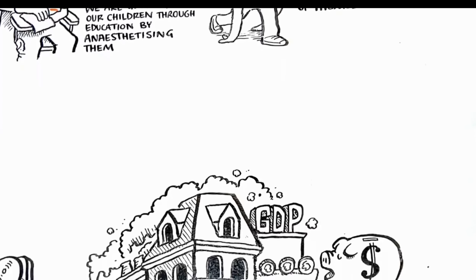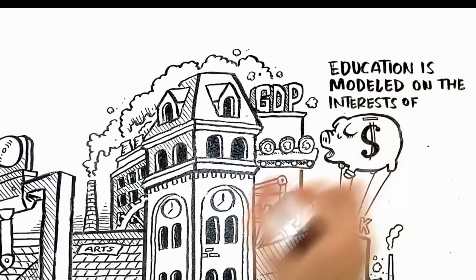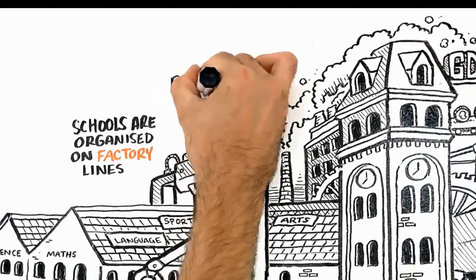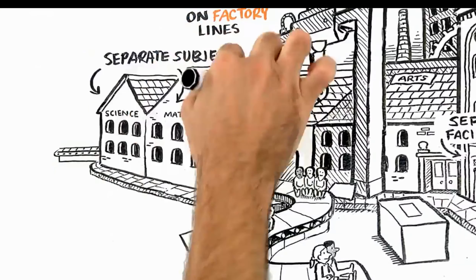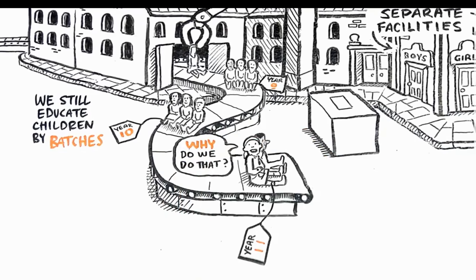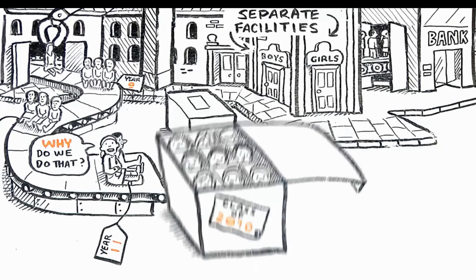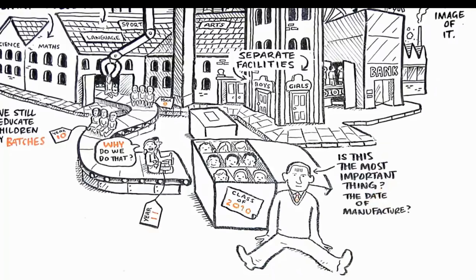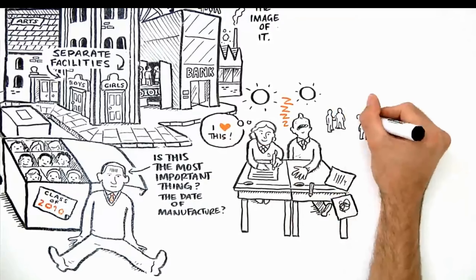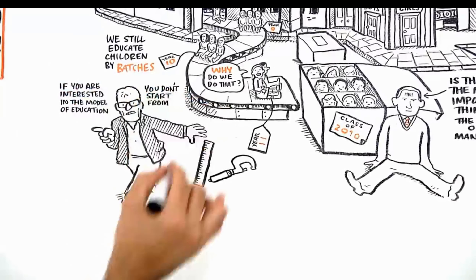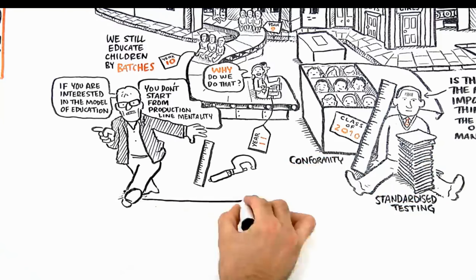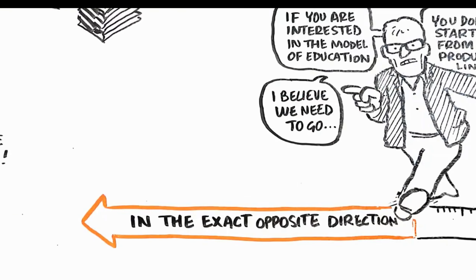We have a system of education that is modeled on the interests of industrialism. Schools are still pretty much organized on factory lines — ringing bells, separate facilities, specialized into separate subjects. We still educate children by batches, putting them through the system by age group. Why is there this assumption that the most important thing kids have in common is how old they are? It's like the most important thing about them is their date of manufacture. I know kids who are much better than other kids at the same age in different disciplines, or at different times of the day, or better in smaller groups. If you're interested in the model of learning, you don't start from this production line mentality. It's essentially about conformity — and increasingly about standardized testing and standardized curricula. I believe we've got to go in the exact opposite direction. That's what I mean about changing the paradigm.